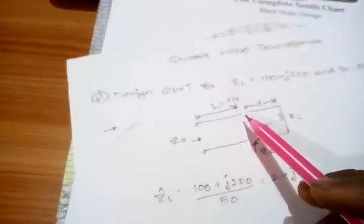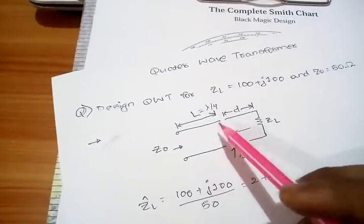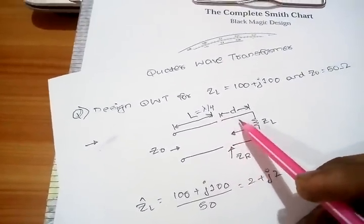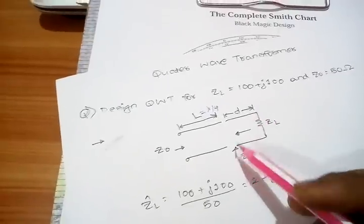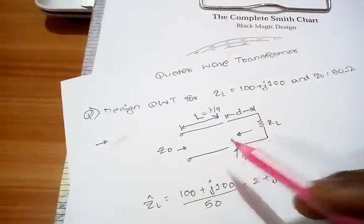After lambda by 4, there will be resistance. Here we are putting the quarter wave transformer and this is the distance d. Zr is the input resistance here.